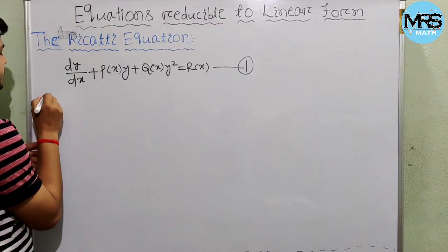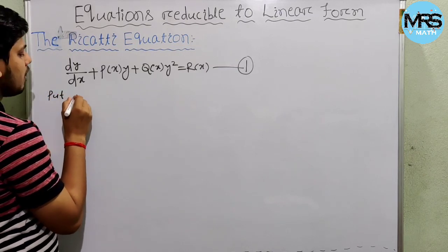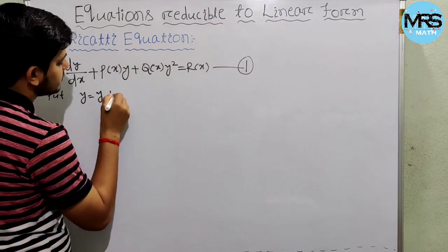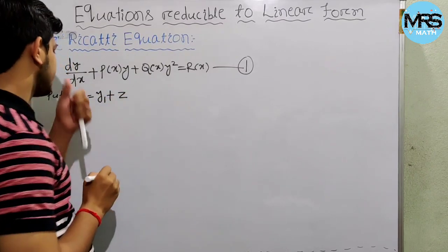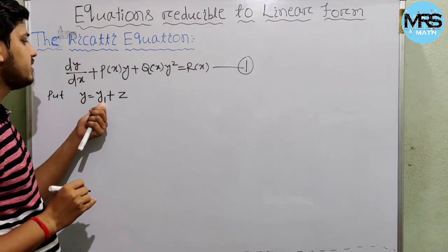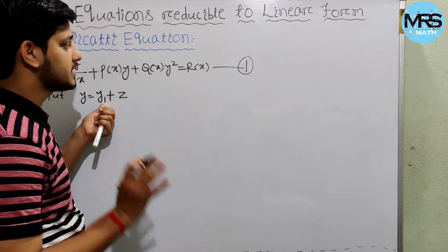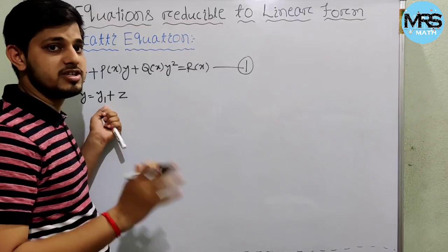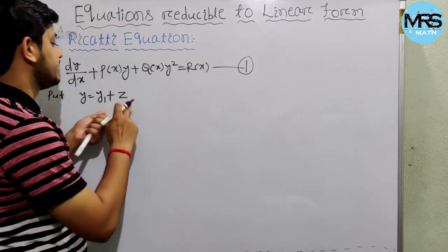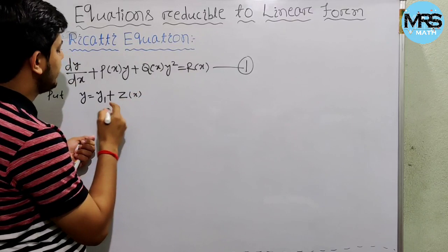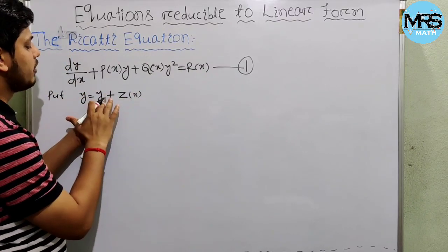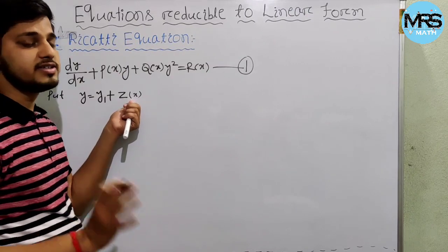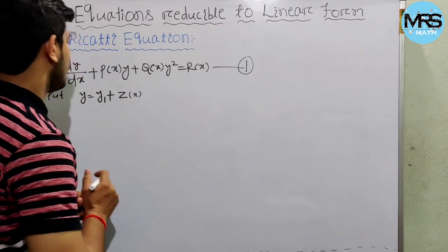By changing variables, we can convert this Riccati differential equation to the Bernoulli differential equation and solve it. We substitute y = y1 + z, where y1 is any particular solution of equation (1) which is known to us, and z(x) is unknown.